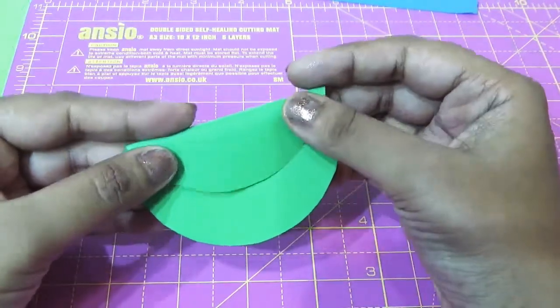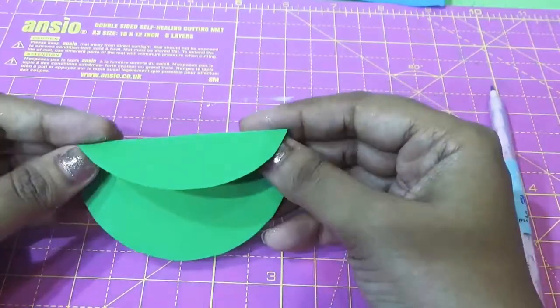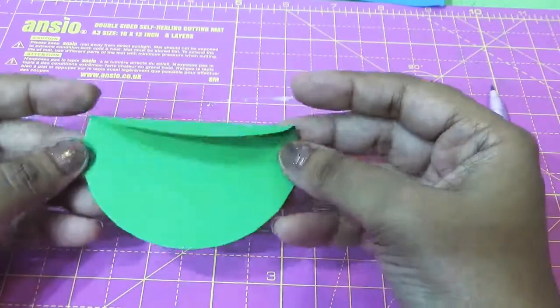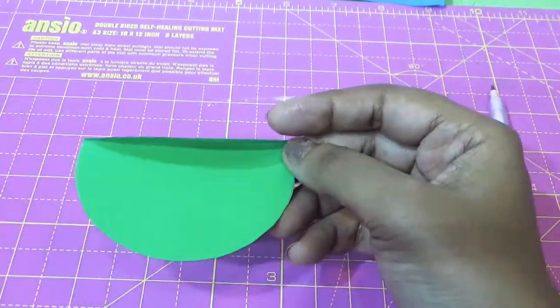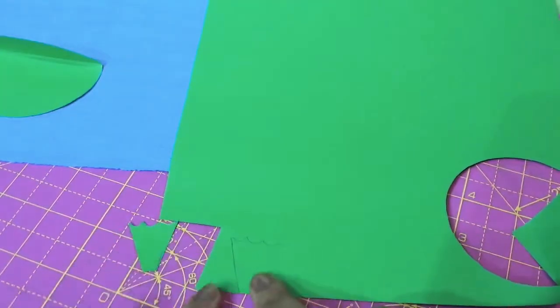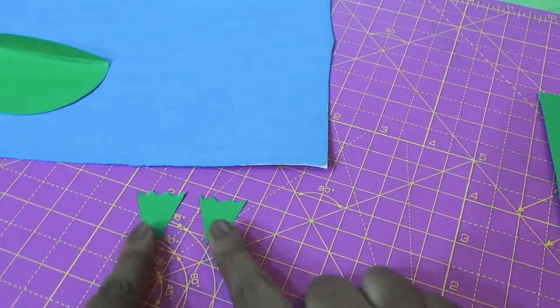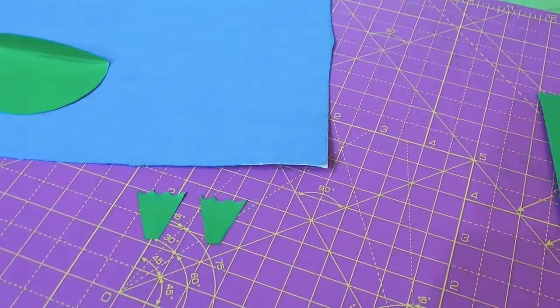We'll fold half of the sheet. Now I will draw the leg and hand, and then I will cut it like this. This is the leg and this is the hand.